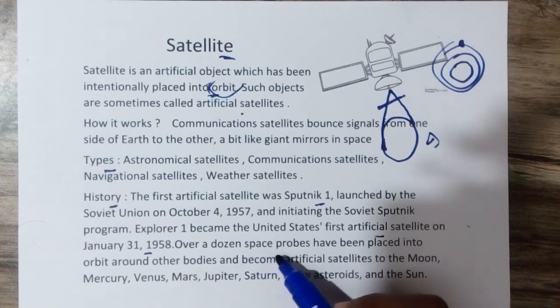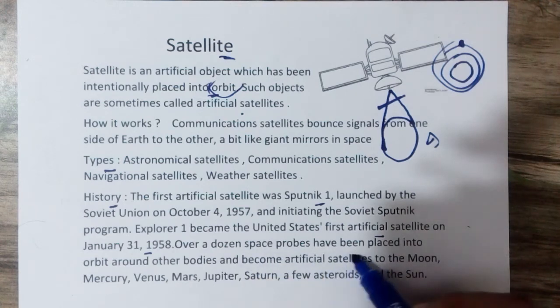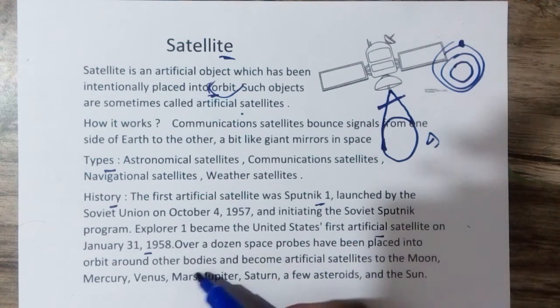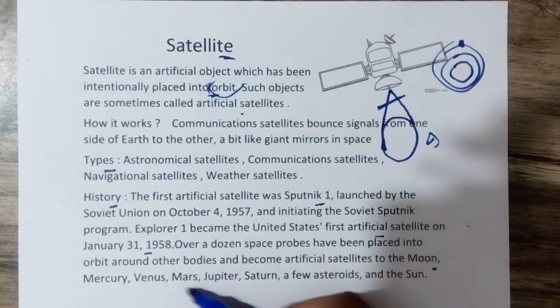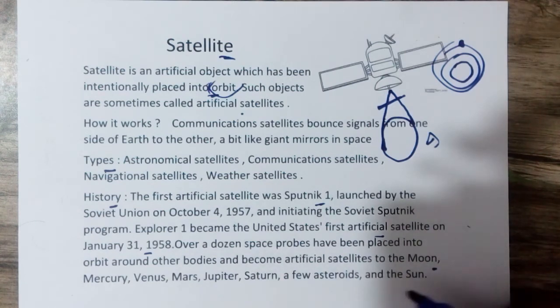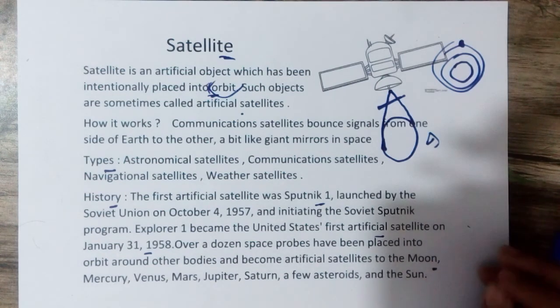Over a dozen space satellites have been placed into orbit around the Earth, Moon, Mercury, Venus, Jupiter, Saturn, a few asteroids, and the Sun.